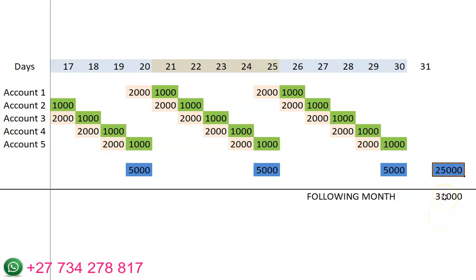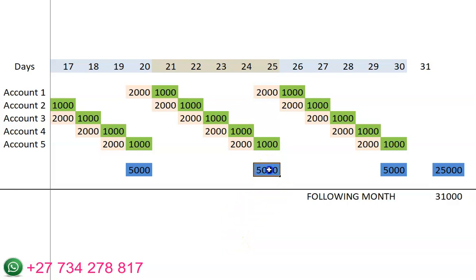If you continue without stopping — putting in 1,000 rand and taking out 1,000 rand for the whole month — you will be able to make 31,000 rand profit. I will be able to give you a high-level strategy on how you can actually use this money to grow your money more, if you are able to register with my link below and WhatsApp me after registering.